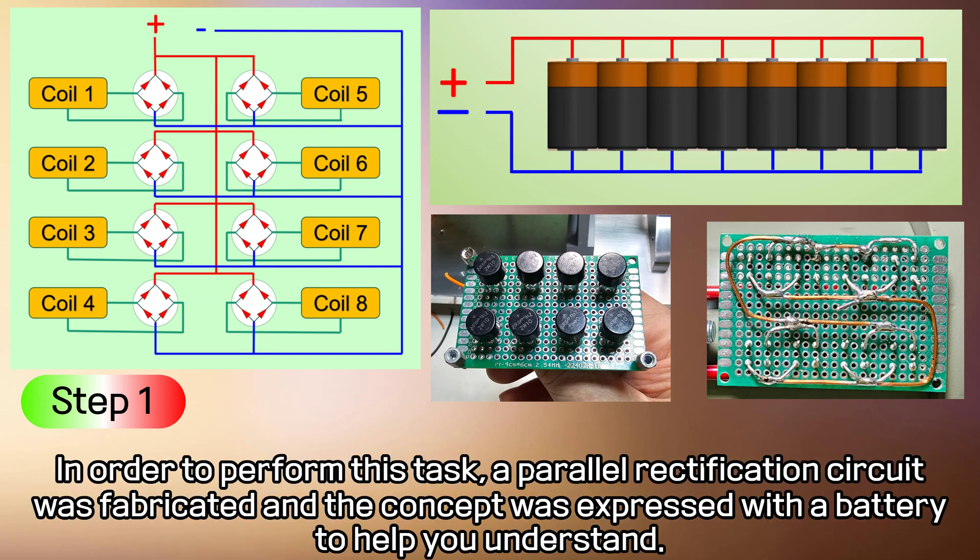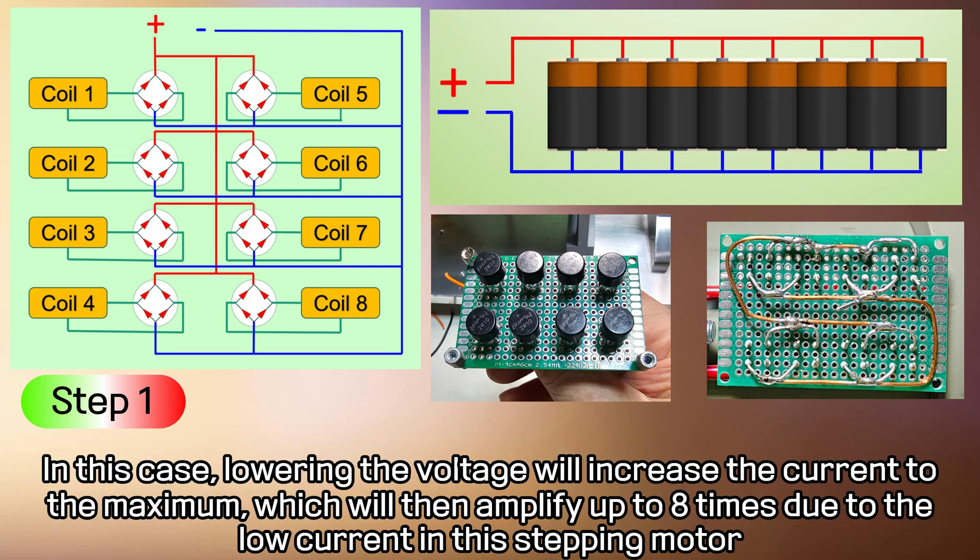In order to perform this task, a parallel rectification circuit was fabricated and the concept was expressed with a battery to help you understand. In this case, lowering the voltage will increase the current to the maximum, which will then amplify up to 8 times due to the low current in this stepping motor.